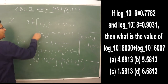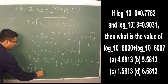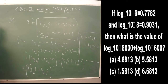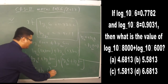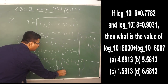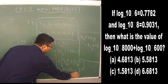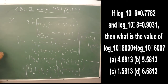Rearranging, group the known values: (log 8 + log 6) = 0.9031 + 0.7782. Separately, log 1000 and log 100 need to be calculated using the power rule: log(aⁿ) = n·log a.